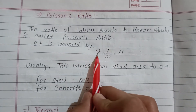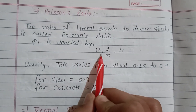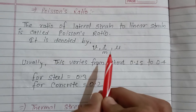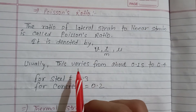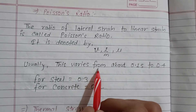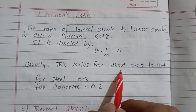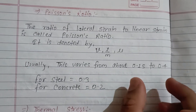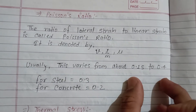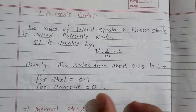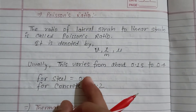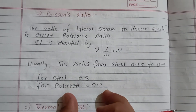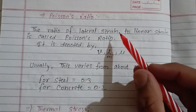We denote Poisson's ratio as nu (NUE), 1/m, or mu. This varies from about 0.15 to 0.4. For steel it is 0.3, but for concrete it is 0.2. This is Poisson's ratio.